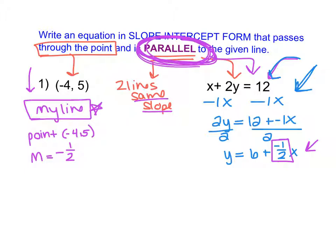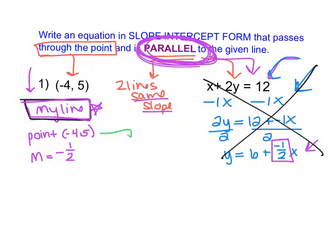Now that I have a point and a slope, I can cross off that section — its purpose was just to find the slope. Now I'm going to write the equation of my line starting in point-slope form: y minus my y-coordinate of 5 equals negative one-half times the quantity x minus my x-coordinate of negative 4. Using keep-change-change, that becomes plus 4 inside the parenthesis.